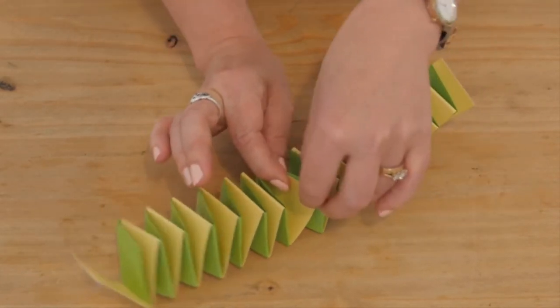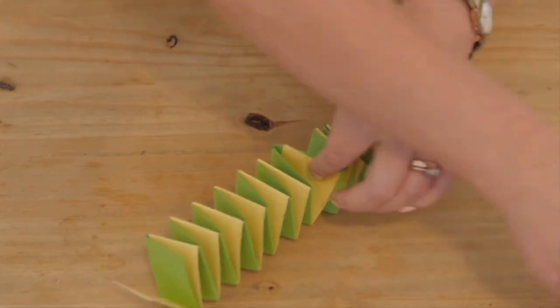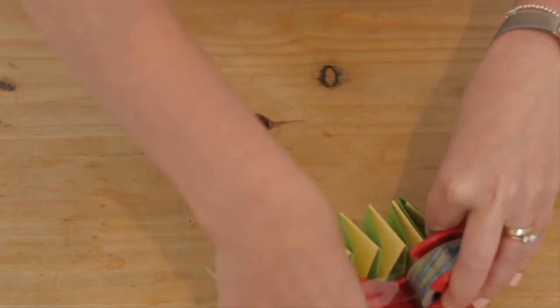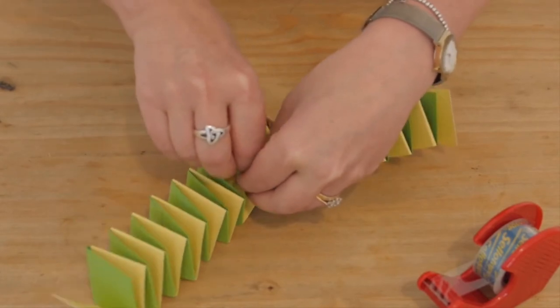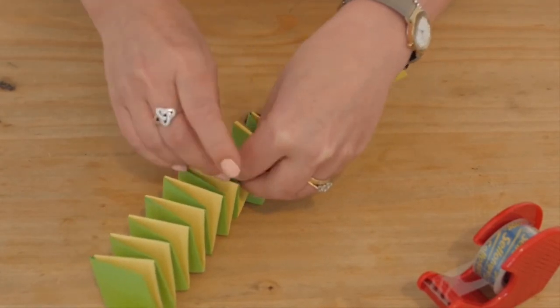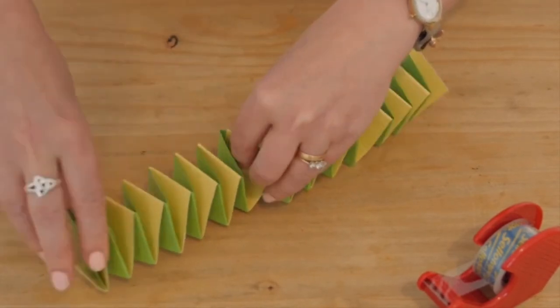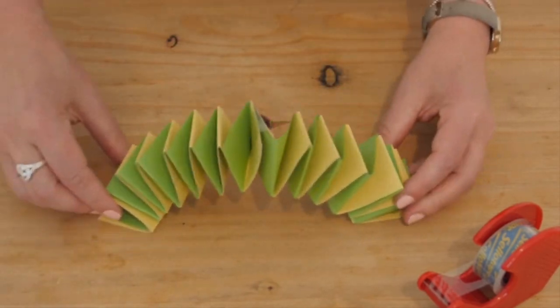Take a bit of sellotape and stick them together in the middle and this will make our lovely caterpillar's arch.